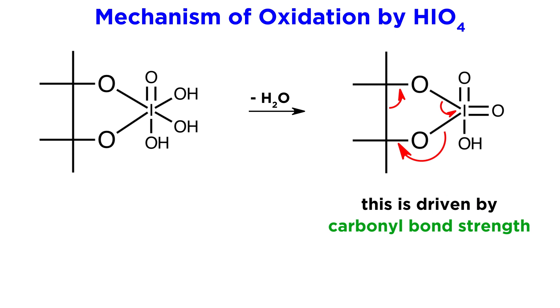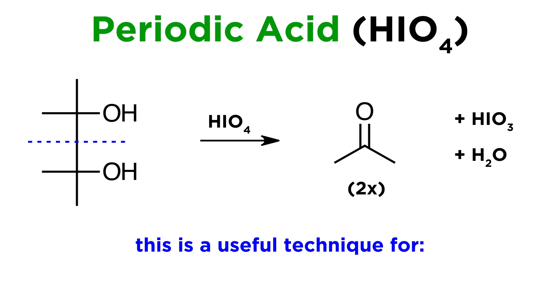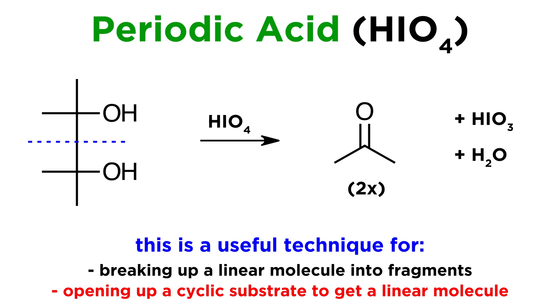This is largely driven by the strength of carbonyls, given their substantial bond enthalpies. We have thus split the substrate up into two fragments, producing iodic acid and a water molecule in the process. So with the mechanism understood, we can see what a useful technique this is in allowing us to either break up a molecule into fragments, or open up a cyclic substrate to get a linear one. So oxidation with periodic acid is definitely a strategy to add to our organic synthesis toolkit.